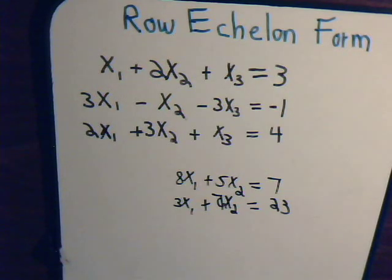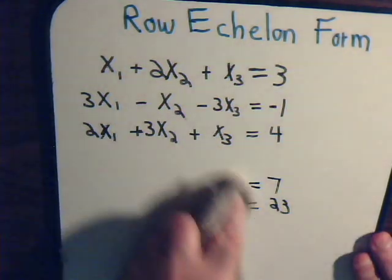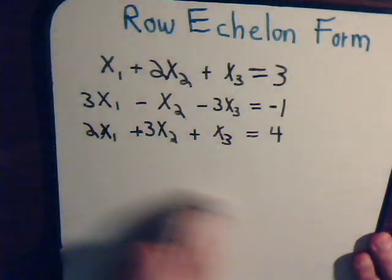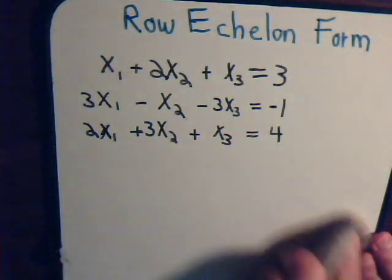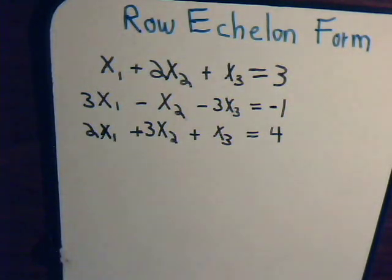But when you have more than two equations, like we have here, we need a bit more of a systematic approach. That's what the row echelon form is all about. To set it up, we use what's called the augmented matrix.